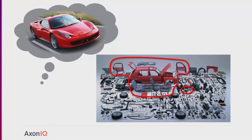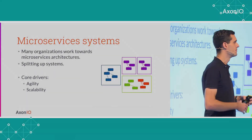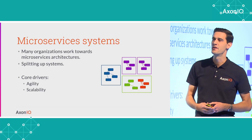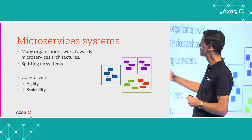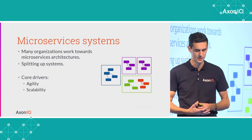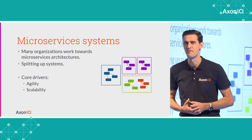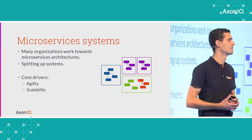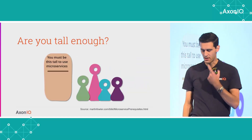You always end up in a different place than the one you originally had when you drew the first boxes and arrows on a whiteboard. People started discovering that the way Axon allows you to build software is very useful when building microservices systems. Microservices promise a lot of agility and scalability, but it's very easy to build a microservices environment that doesn't deliver on those advantages — it's very easy to mess up.